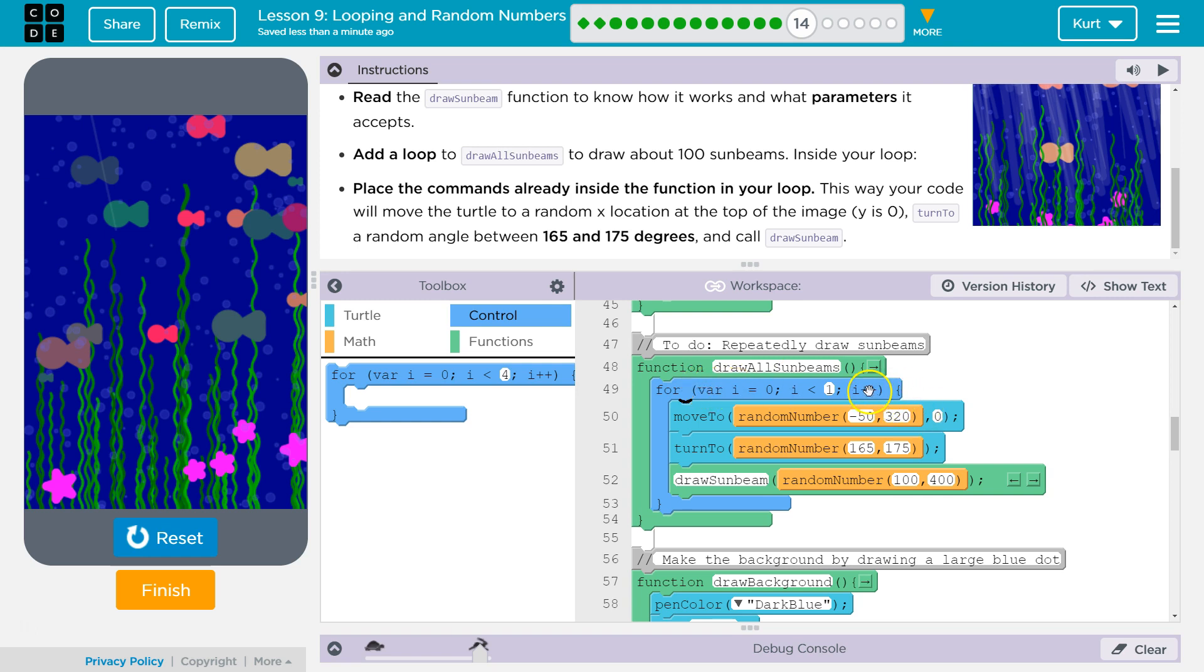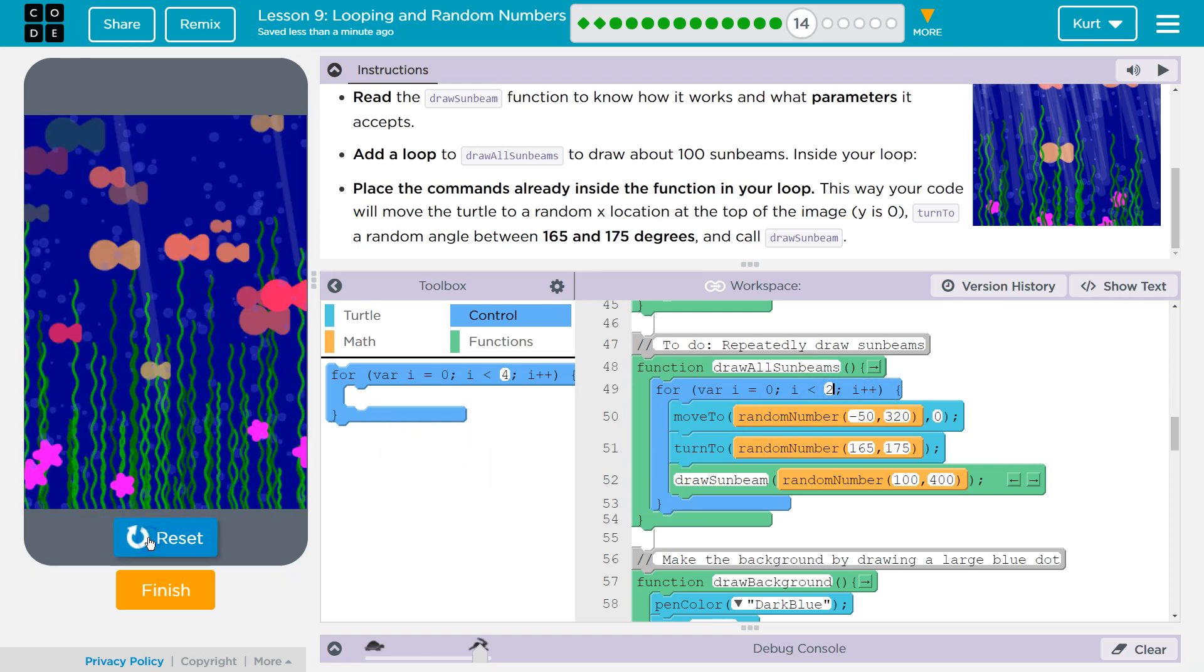0. I plus plus means add 1. Plus 1 is 1. 1 is not less than 1. It's done with our for loop, hits the bottom of our function, and keeps going. So if I write 2, it's two sunbeams because it draws the first one at 0. I equals 0. Goes all the way through, hits the bottom. I plus plus means I plus 1. 0 plus 1 is 1. And then says 1 is less than 2. Drops in, runs the code again, hits the bottom, goes back to the top. 1 plus 1 is 2. 2 is not less than 2. And it is done with two sunbeams. Whatever the number here is how many times it's going to work.